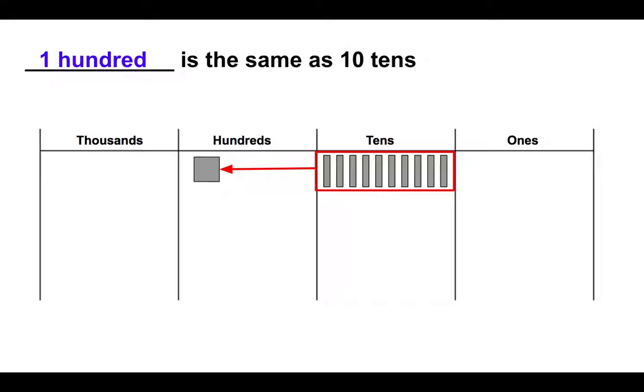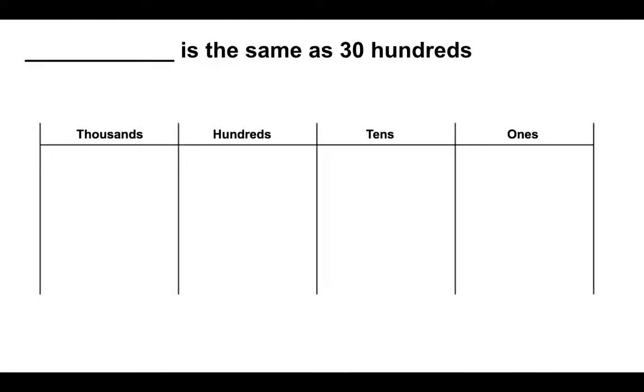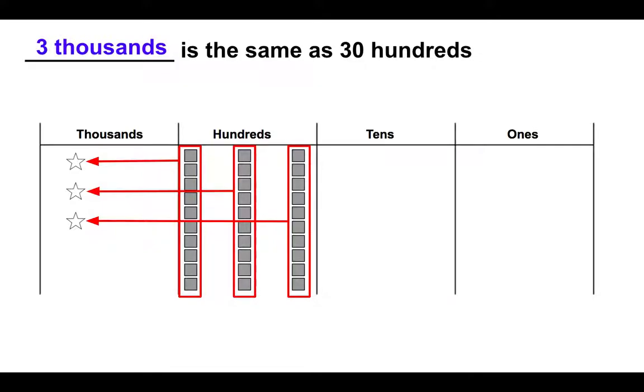We can do this even as the numbers become larger. If it asks, blank is the same as thirty hundreds. Well in your head, you can visualize a place value chart filled with thirty hundreds. And then you can think to yourself, well ten hundreds will make one thousand. Another ten hundreds makes another thousand, and another ten hundreds makes a third thousand. On our place value chart we have drawn that three thousands is the same as thirty hundreds.